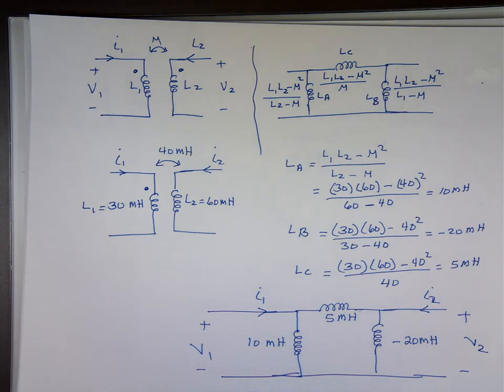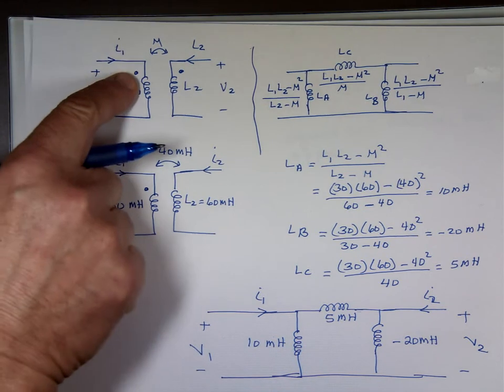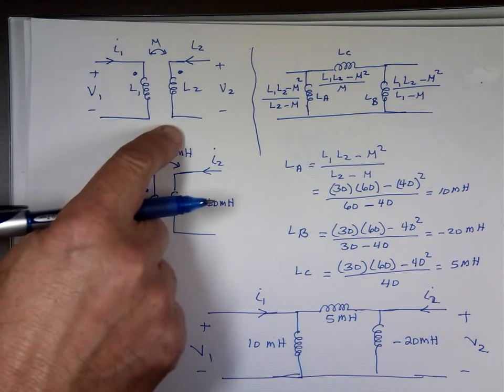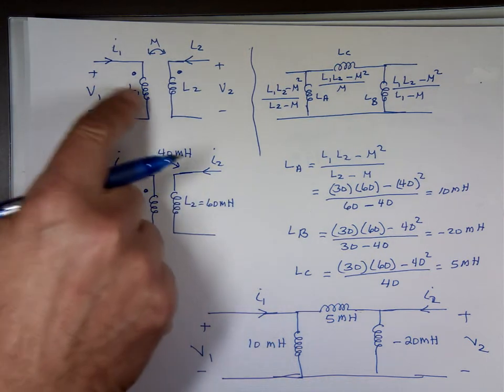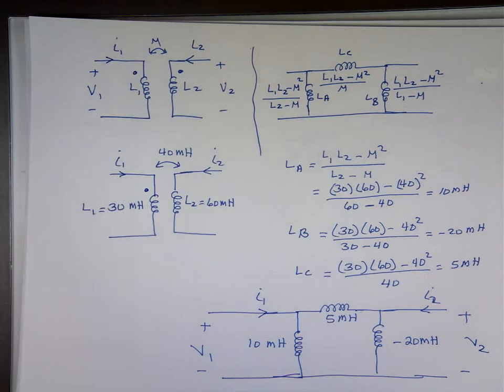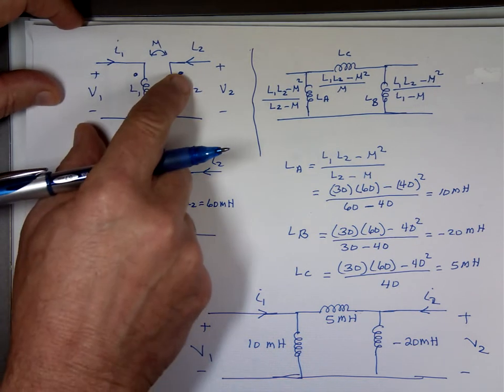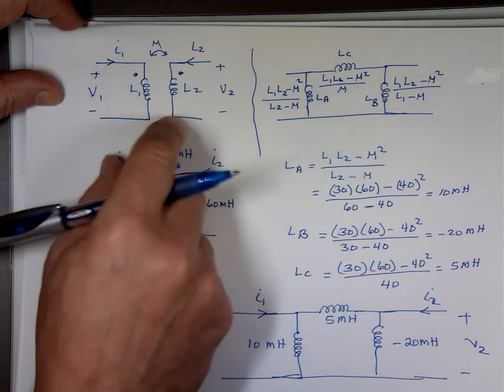What about if one of the currents does not? So as long as both currents entering the dots or both them leaving the dots, this will give me that. What happens if one is entering the dots, but for the second one, one was leaving the dot like the dot is down here.